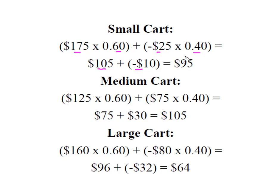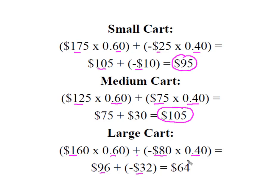For my small cart, my weighted payoff is $95. For the medium cart, I took my maximum times alpha plus my minimum times 1 minus alpha, and my weighted payoff is $105. For my large cart, I took my maximum times alpha plus my minimum times 1 minus alpha, and I end up with $64. Under this criterion, I'm going to select the decision that gives me the highest weighted sum, which is the medium cart at $105.